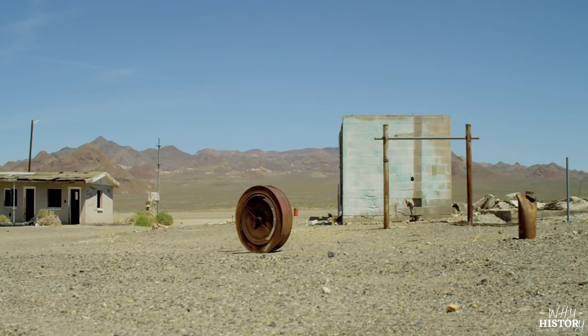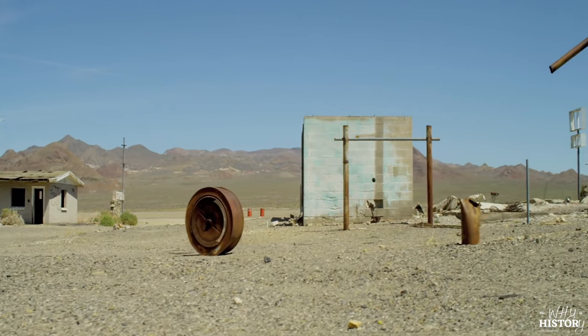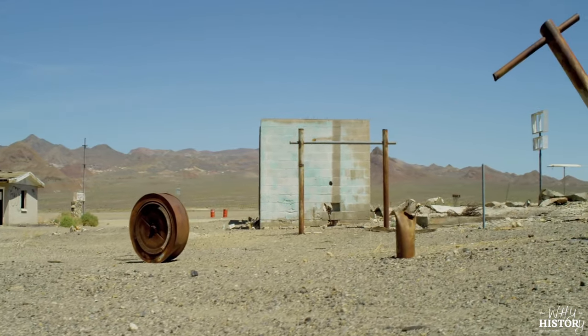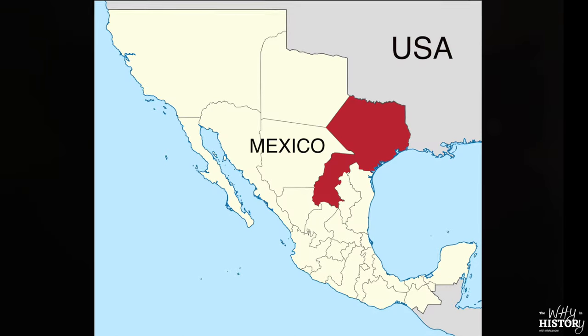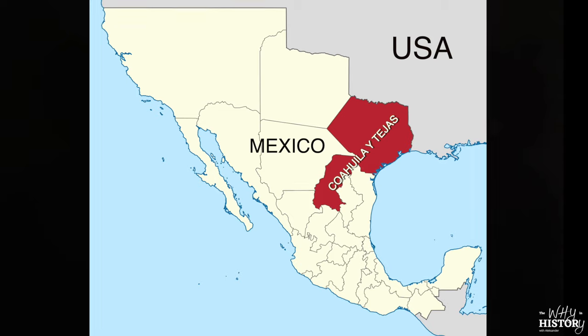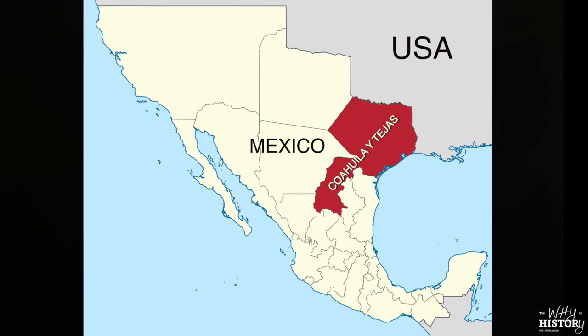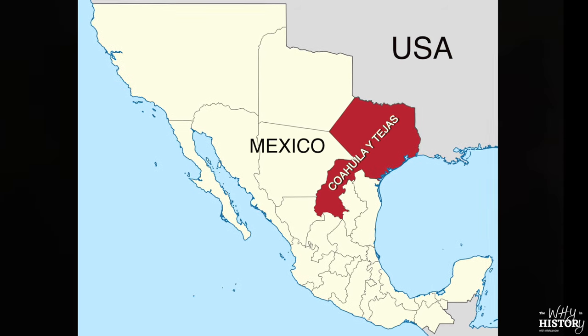At this point, nobody really lived in Texas, which meant that it didn't have enough people to be made its own Mexican state. Parts of what is now Texas were grouped with several states, with the largest chunk of it forming part of the Mexican state of Coahuila y Texas.